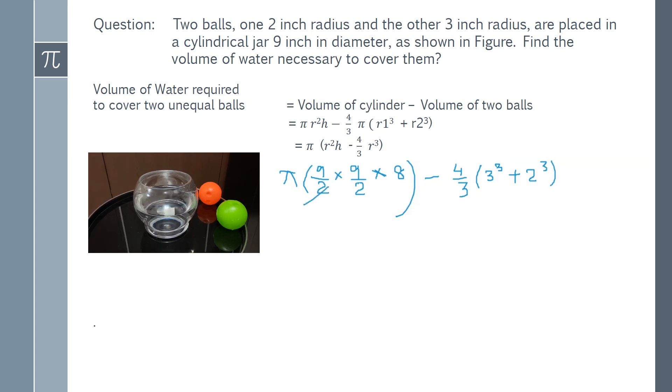This 2 can cancel with 8. It is 4 times. Again cancel this with this 2. 9 into 9 into 2. It is 81 into 2, which is 162. Then here 3 cube is 27 and 2 cube is 8. So, 27 plus 8 which is 35.